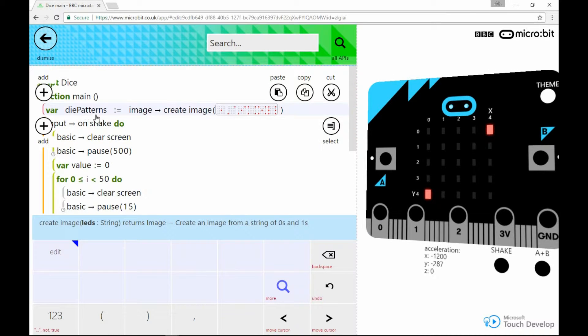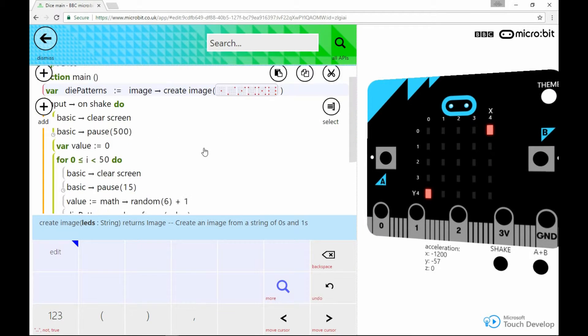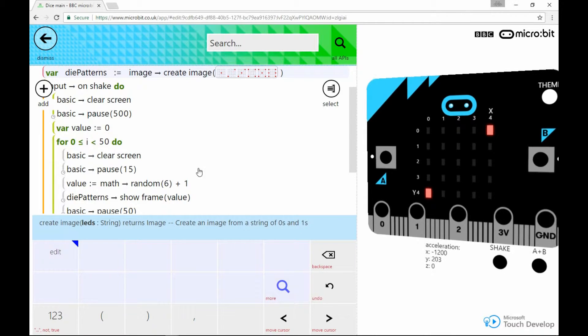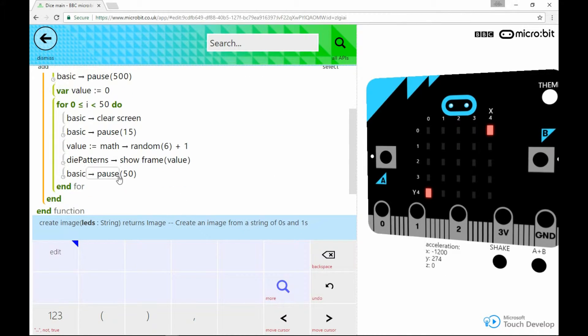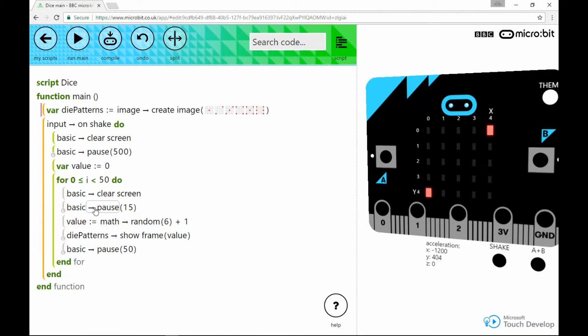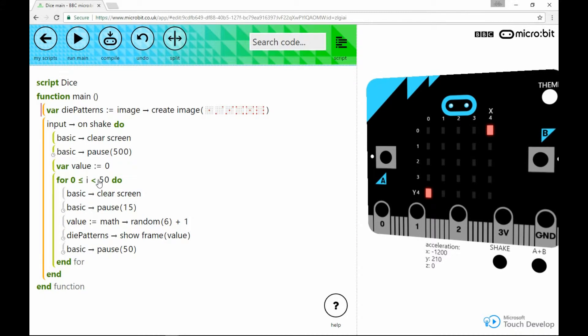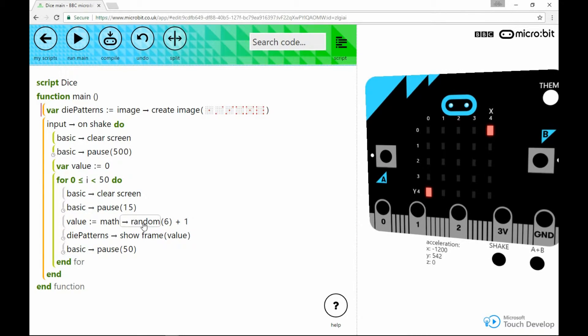So I've created the faces. Now if we look at the main loop here, I have to generate a random number. So I'm using this function here, random. Random six will return a number between zero and five. So I generate a number between zero and five and then add one to it, which then gives me a number between one and six. So that's the random number that represents how the die falls.